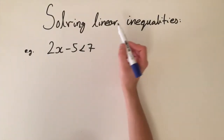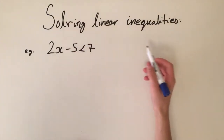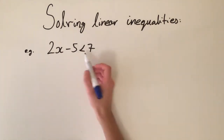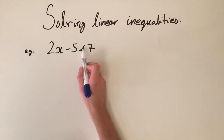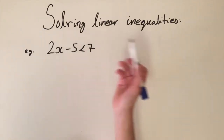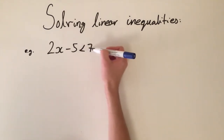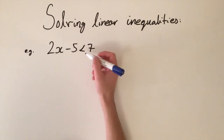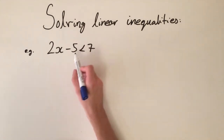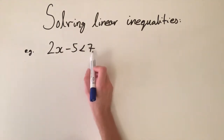In today's video we're going to be looking at solving linear inequalities. An inequality basically means instead of an equal sign we have an inequality sign — greater than or equal to, greater than, less than, or less than or equal to. It means we have a different condition, and in this case we need to find the values of x where 2x minus 5 is less than 7.